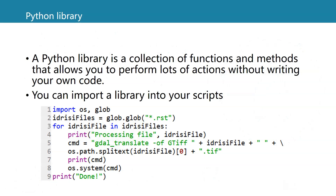Sometimes we need more than is available in standard Python, and therefore we need libraries. Libraries are a collection of functions and methods that add functionality. You can import a library into your own scripts using the import keyword followed by the library name. In this example, you see OS, which is a library for using operating system functions, and GLOB, which is a library for searching for string patterns.